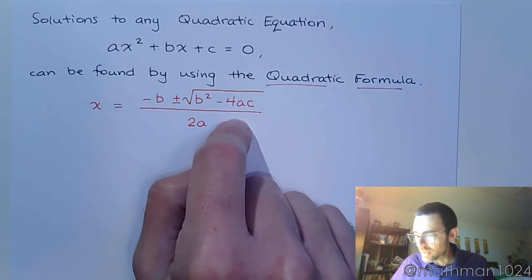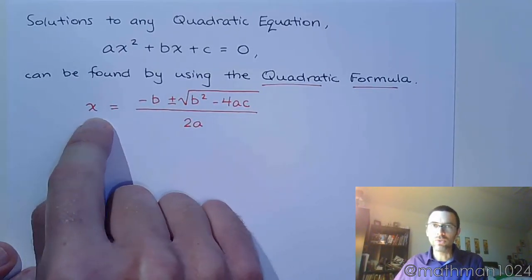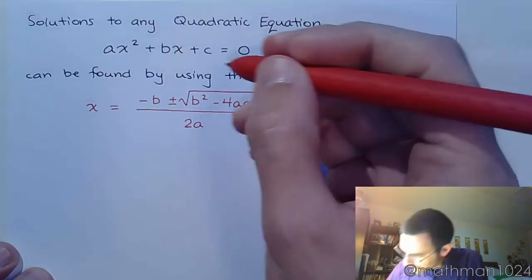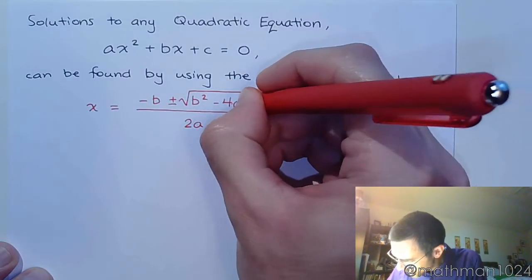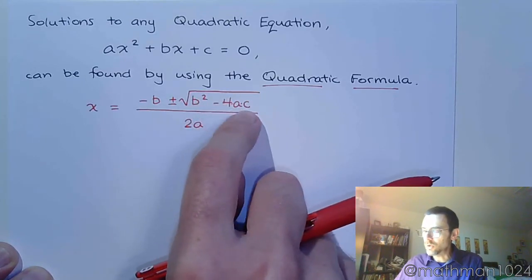Please notice how I've written this formula. It's one big fraction. This fraction bar does not go underneath x and equals, so if you write it that way, stop it. Also, this is 4 times a times c, so this is all connected as a single group right here.